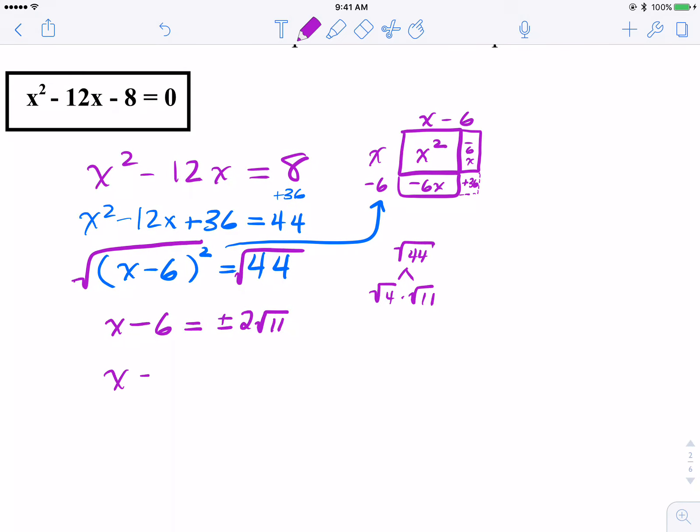And now the last step here would be to add that 6 to the right, adding 6 to both sides. I arrange it such the plus minus is in the middle, and I get my two answers of 6 plus or 6 minus 2 radical 11.